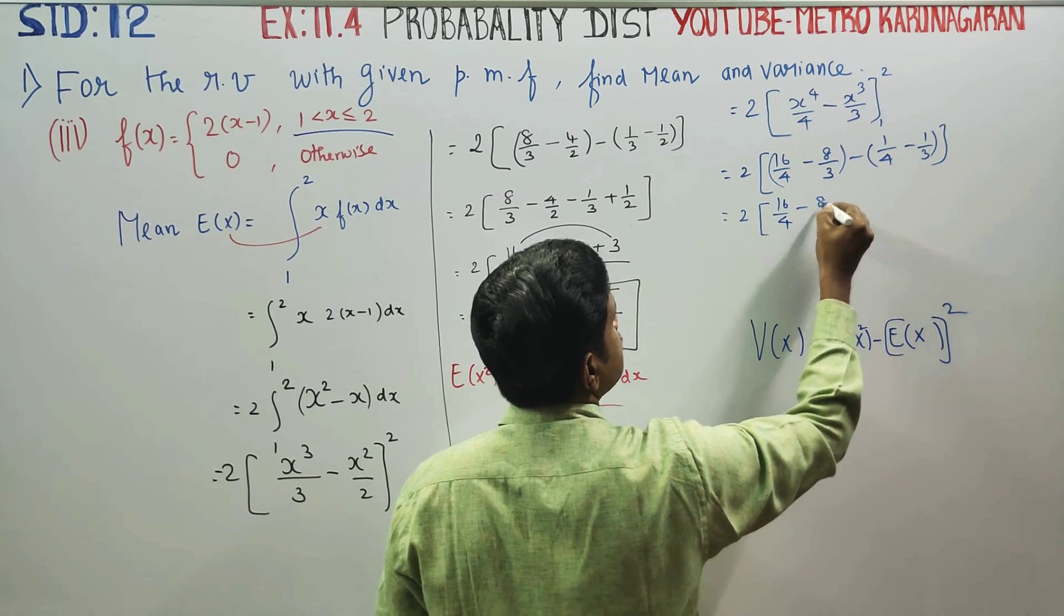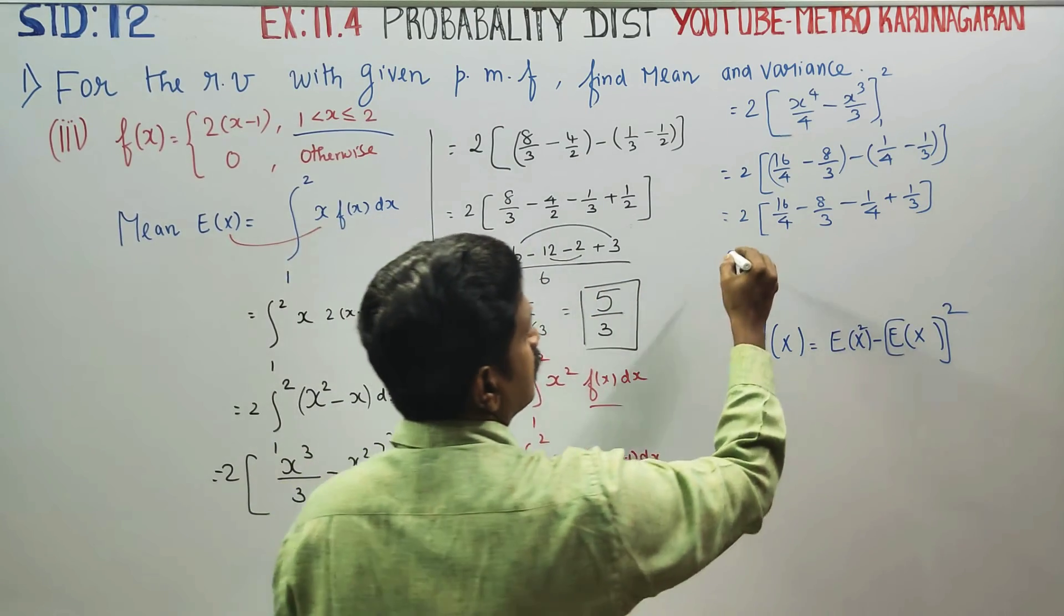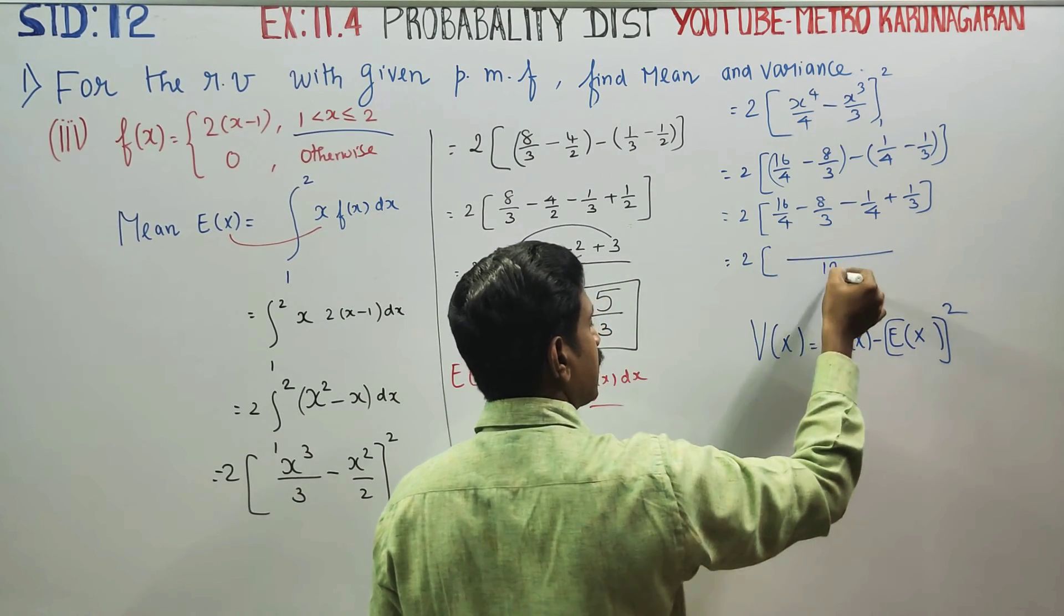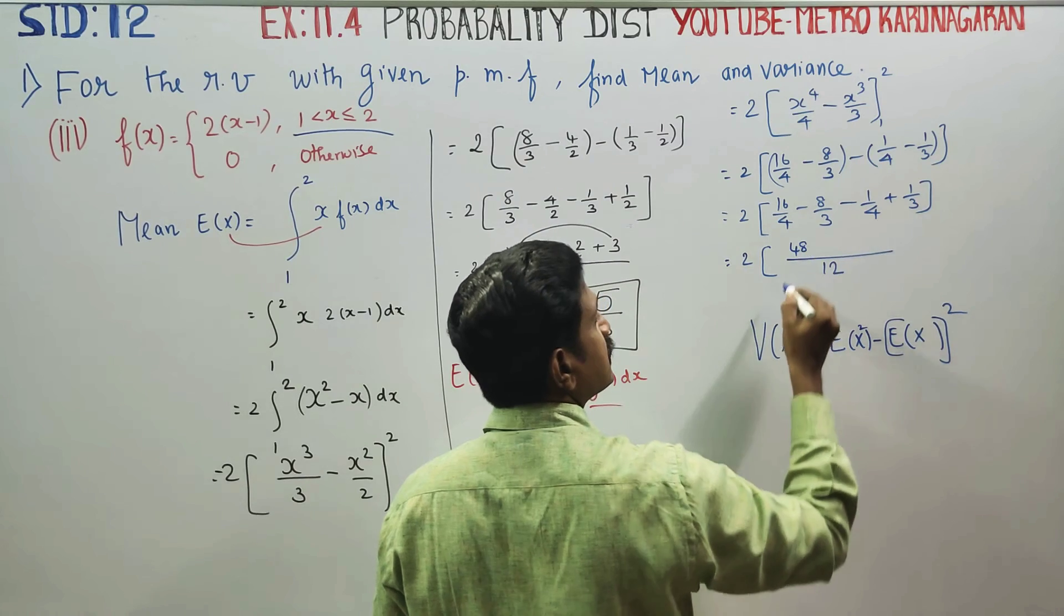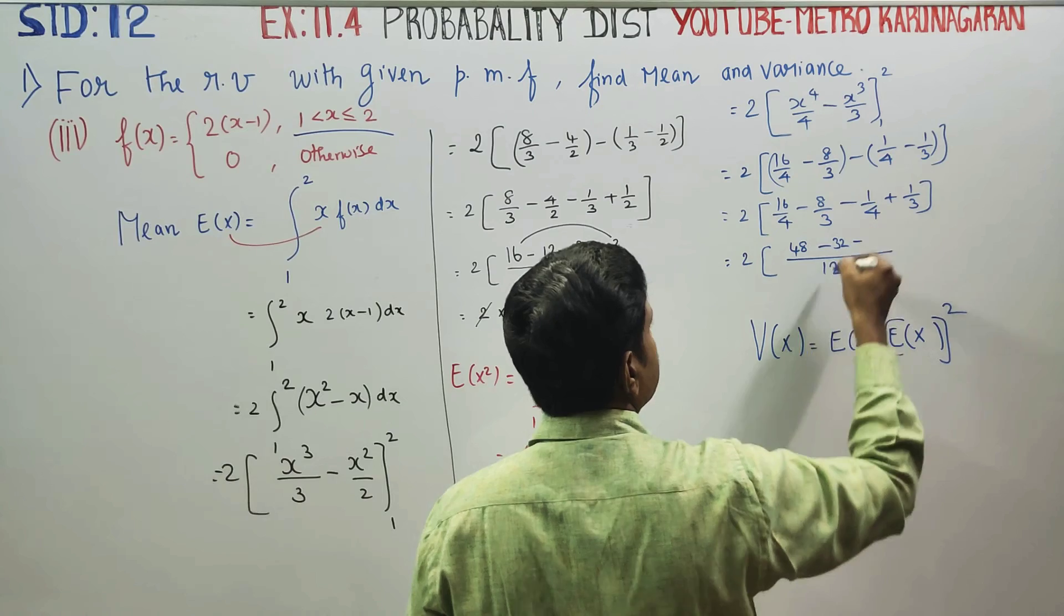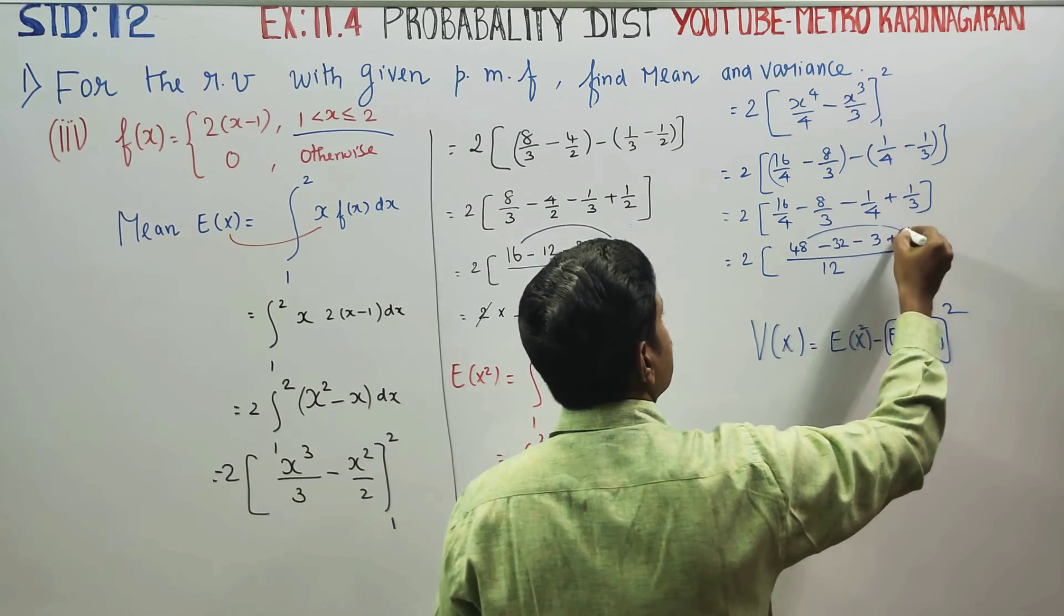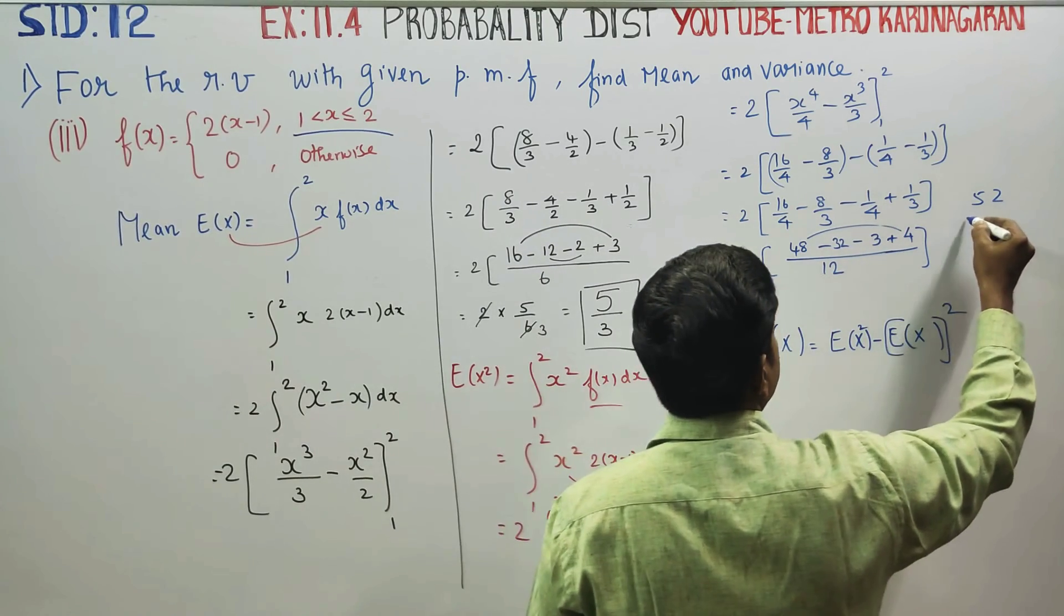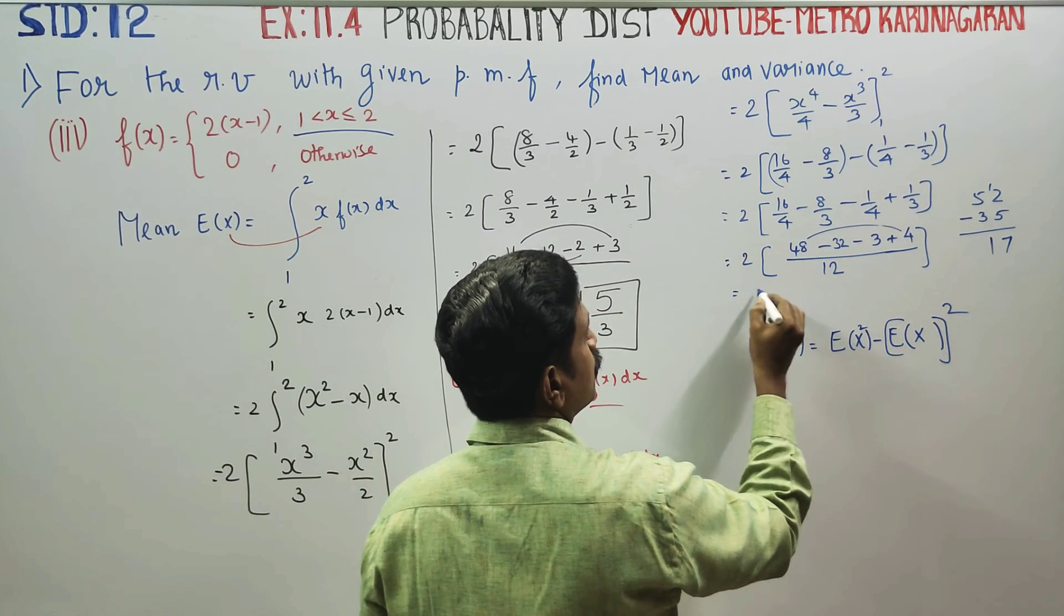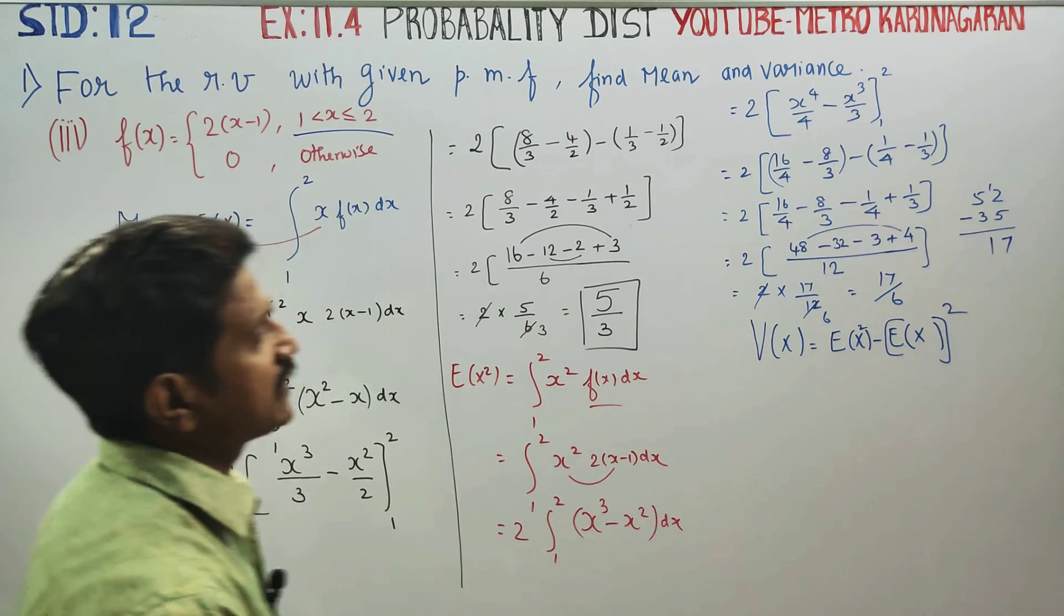2 times 16 by 4 minus 8 by 3 minus 1 by 4 plus 1 by 3. Then 2 times, LCM is 12. We get 52 minus 35, which is 17. So 2 into 17 by 12, canceling gives 17 by 6. This is your expectation of x square.